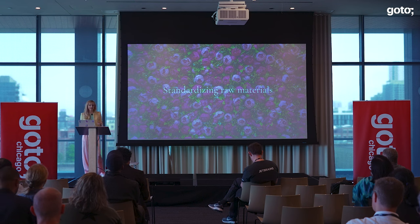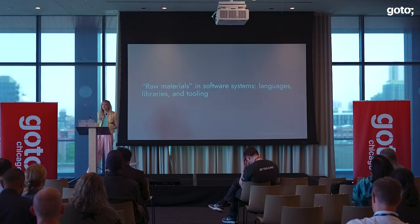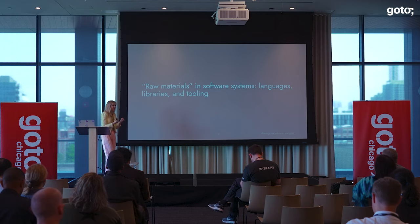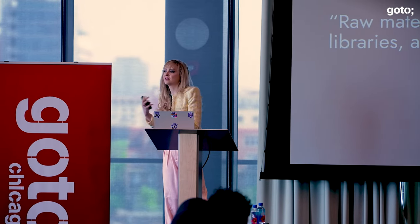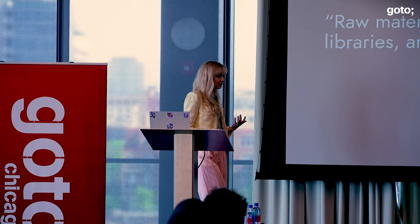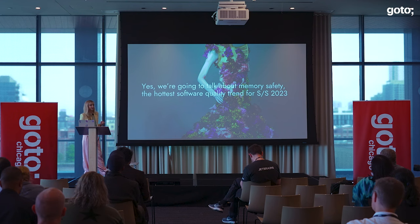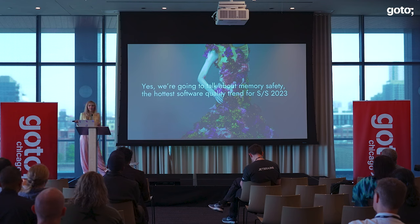The last opportunity in the realm of critical functions is standardizing raw materials. We can think of raw materials in software systems as languages, libraries, and tooling — not tangible, but materials nevertheless. We can think of these as elements woven into the software that need to be resilient and safe to ensure the system overall is resilient. We're going to talk about memory safety, which feels like the hottest trend on the 2023 software quality runways. Everyone is talking about it — even the Consumer Bureau.